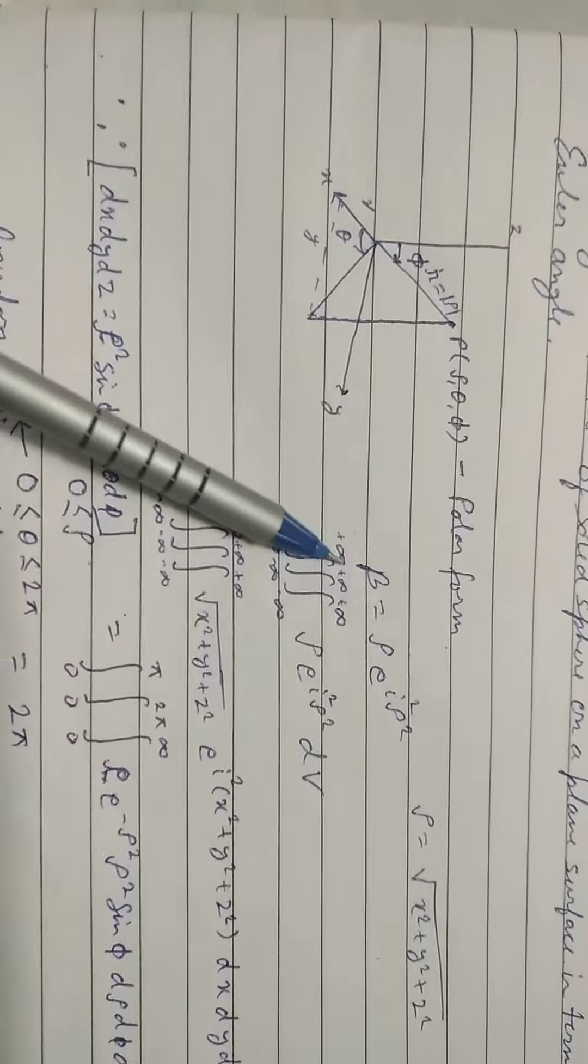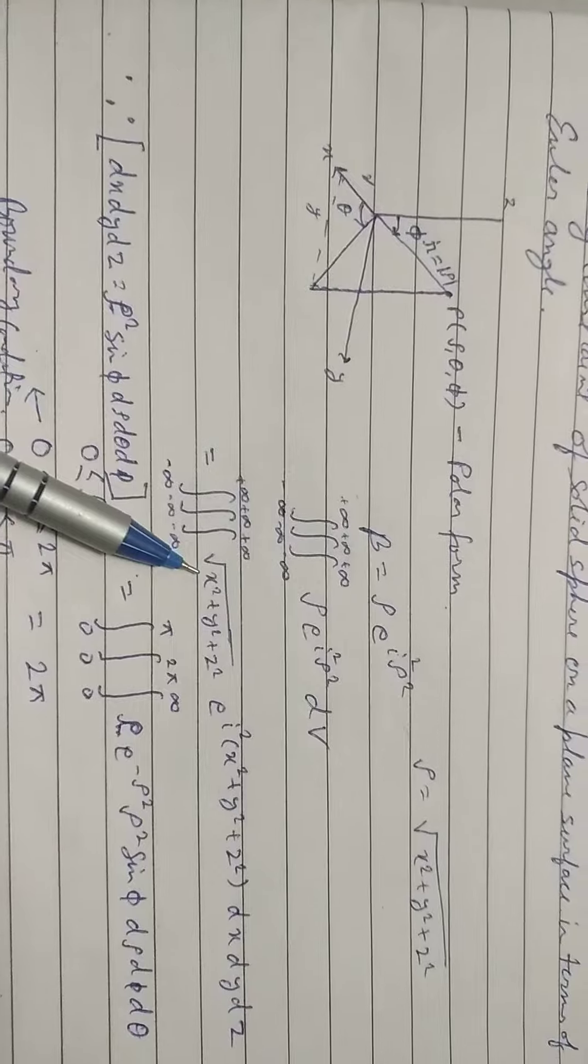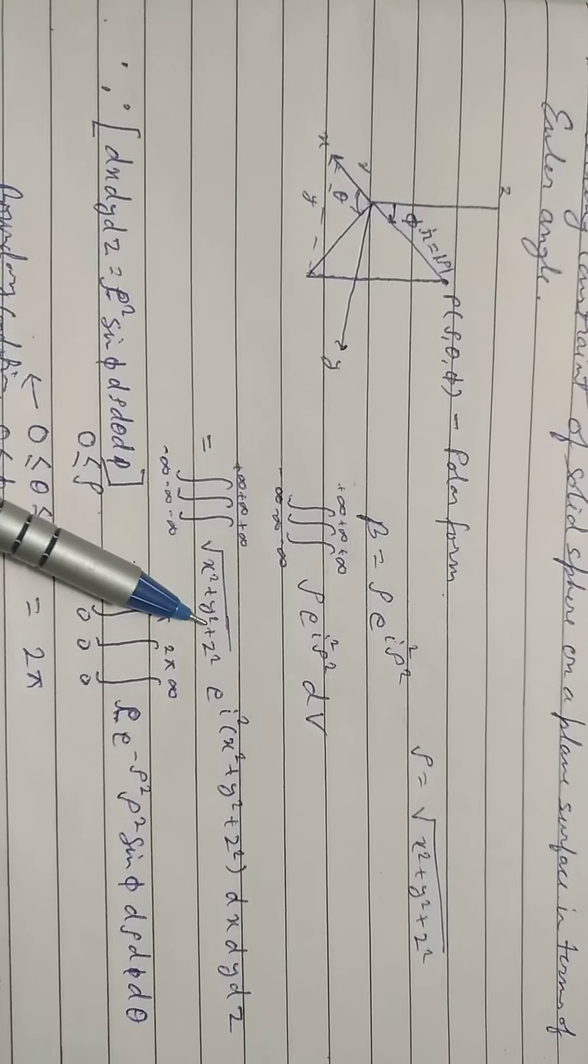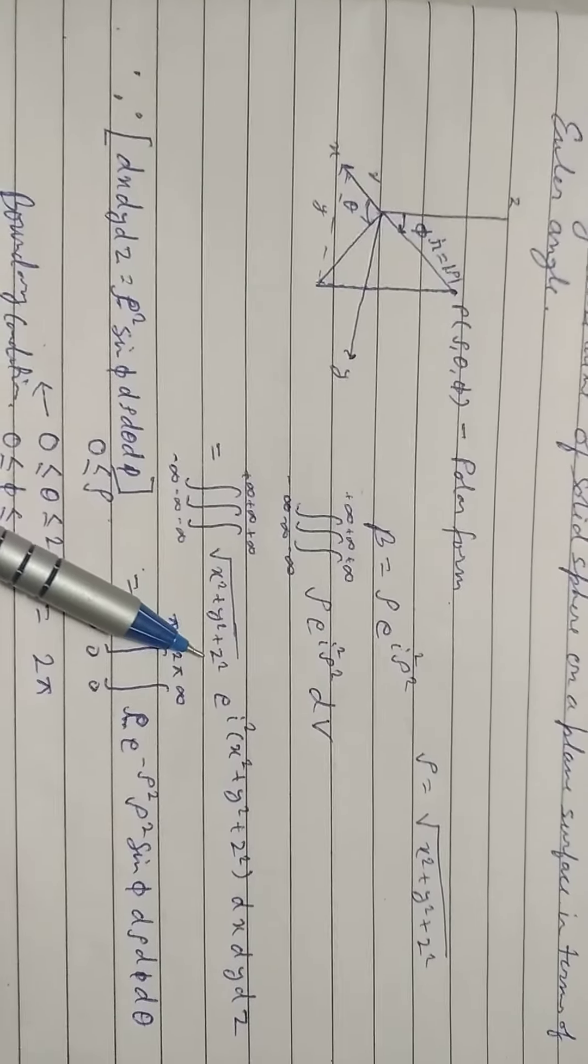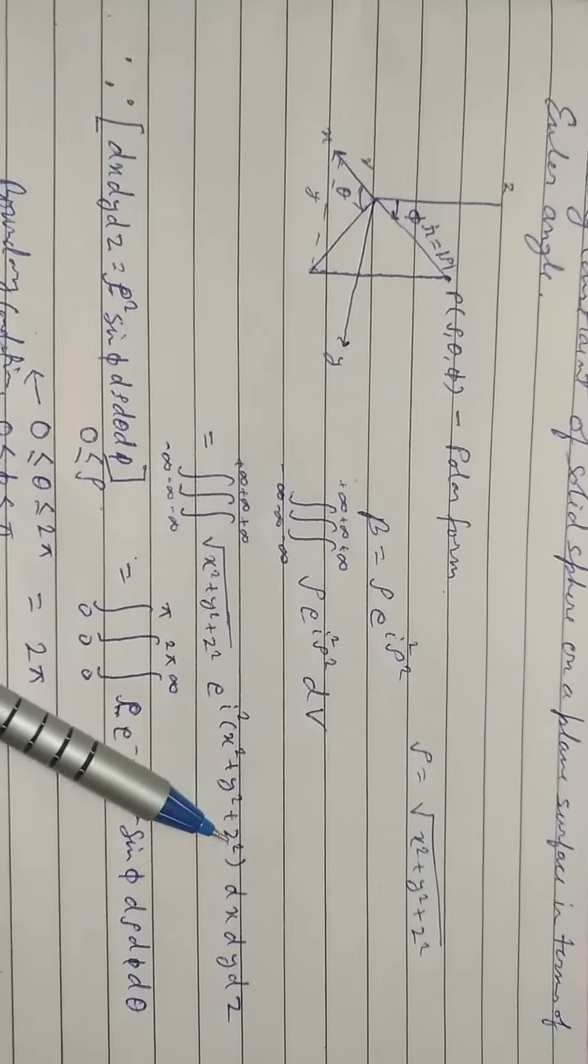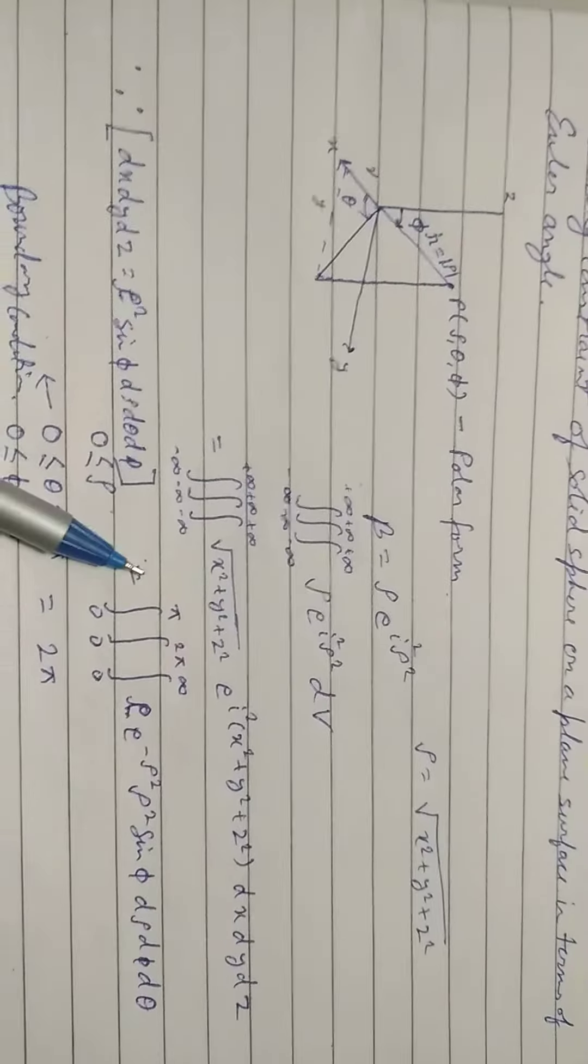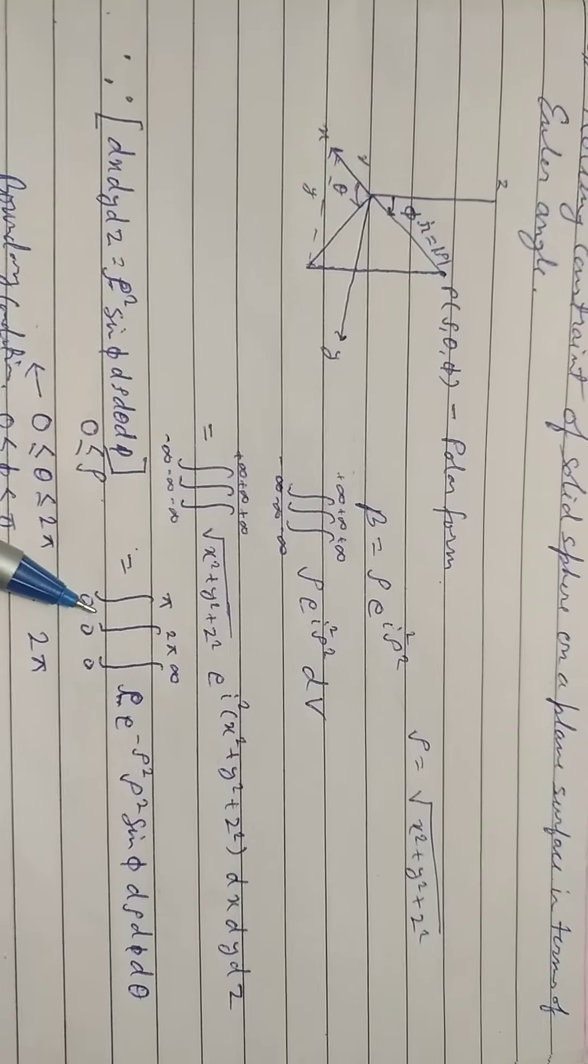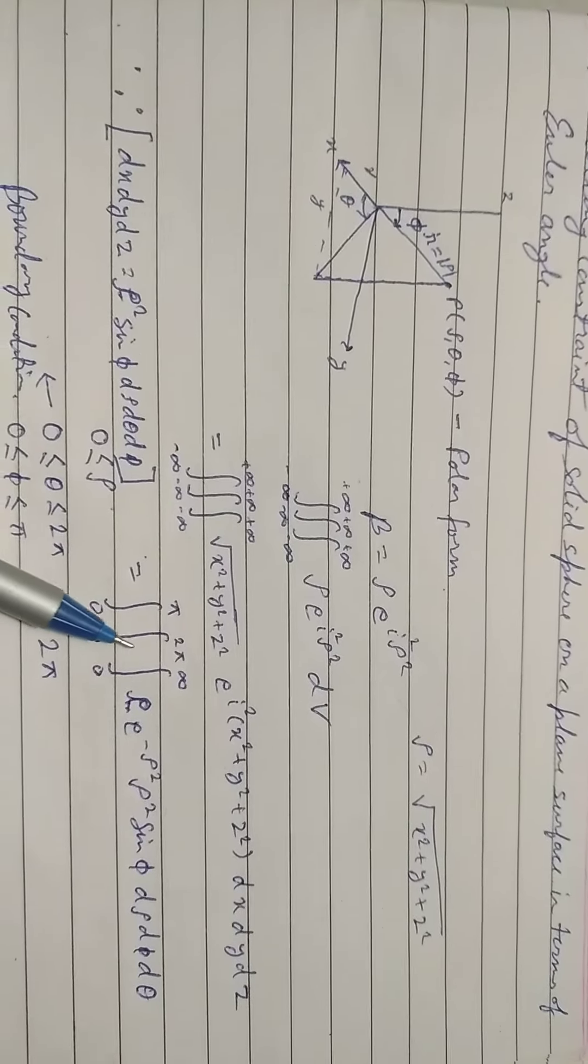Integration of rho e to the i square p square dv is equal to integration from infinities in three coordinate axes with root under x square, y square and z square in summation, e to the i square x square plus y square plus z square dx dy dz is equal to integration from 0 to pi, 0 to 2 pi,